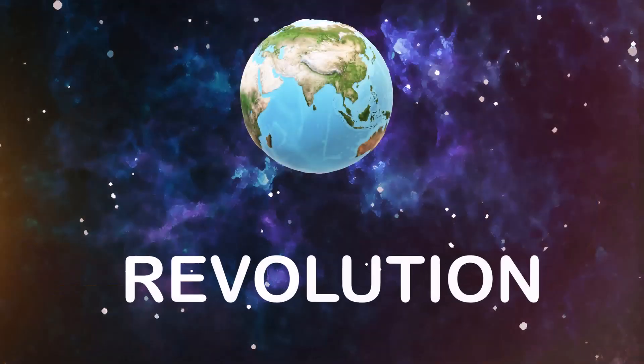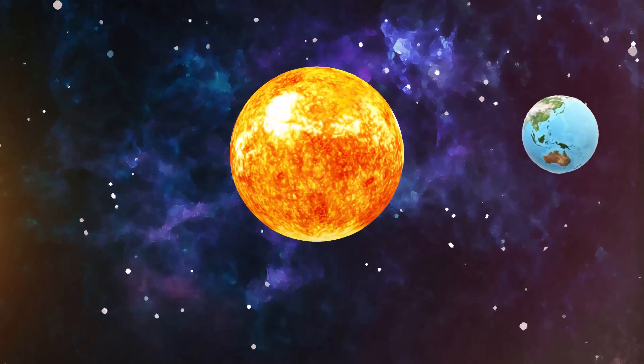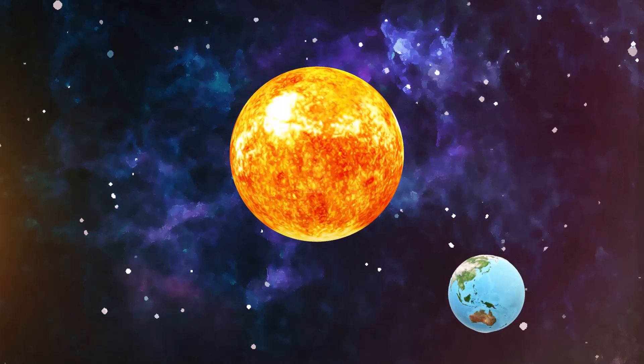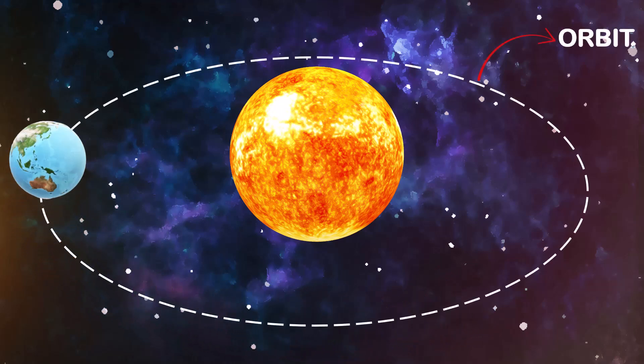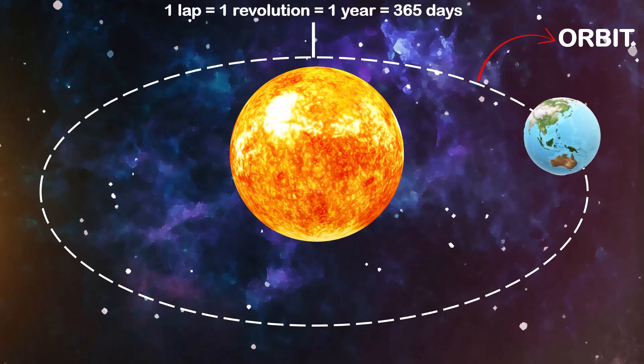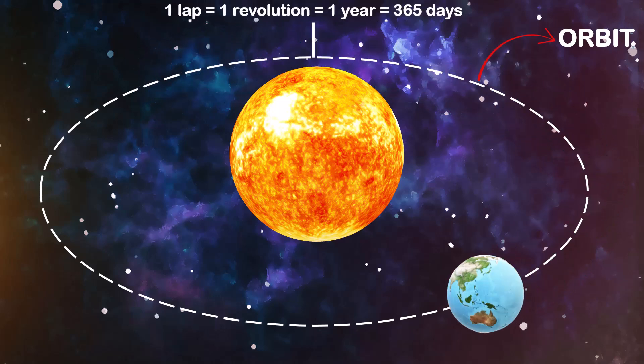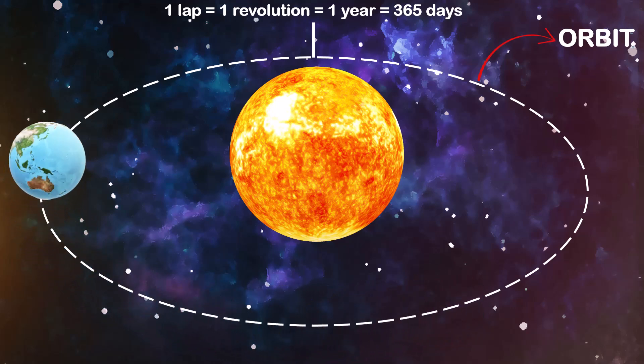Now let's talk about revolution. While the earth spins, it also travels around the sun in a fixed path. This path is called the orbit. When it makes one big lap around the sun, we call it a revolution. One revolution equals one year. Three hundred and sixty-five days.